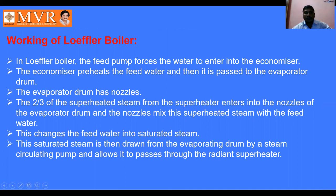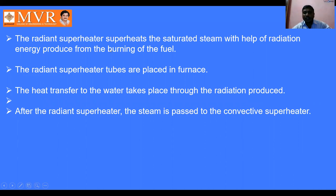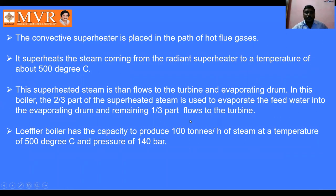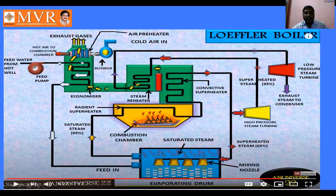Working of the Loffler boiler: the feed pump forces the water to enter into the economizer. The economizer preheats the feed water and then it is passed to the operating drum. The operating drum has nozzles; two-thirds of the superheated steam from the superheater enters into the nozzles of the operating drum, and the nozzles mix the superheated steam with the feed water, changing the feed water into saturated steam. This saturated steam is drawn from the operating drum by the steam circulating pump and passes through the radiant superheater, which superheats the saturated steam using radiation energy. After the radiant superheater, the steam passes to the convective superheater.